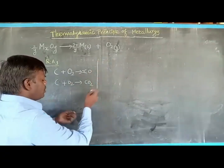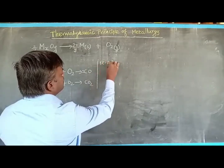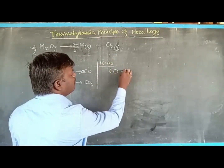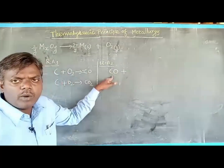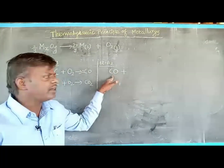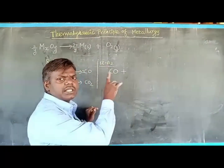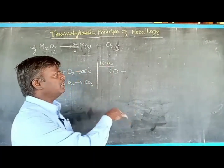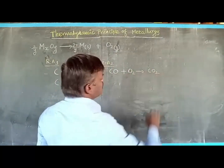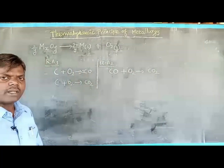We can also use another reducing agent, which is carbon monoxide. Carbon monoxide can also be used as reducing agent for this reduction. If carbon monoxide is used as reducing agent, carbon monoxide is oxidized to carbon dioxide.